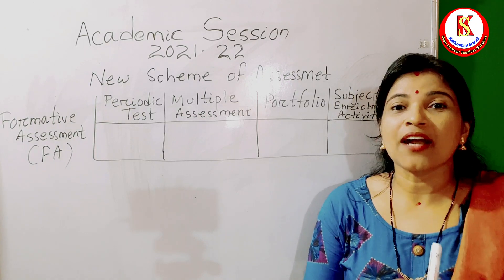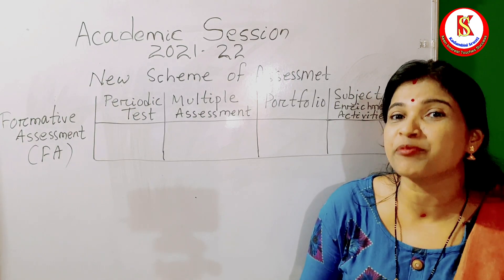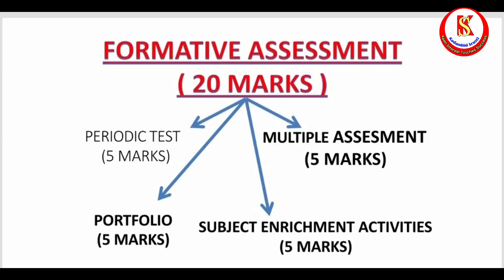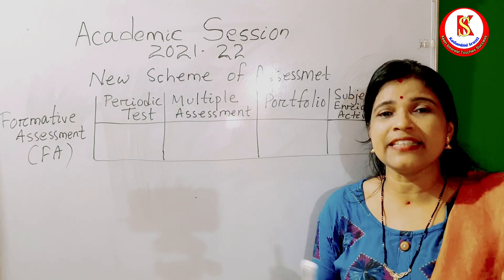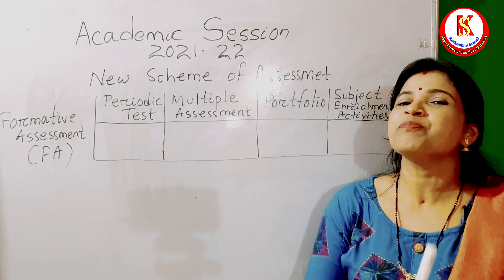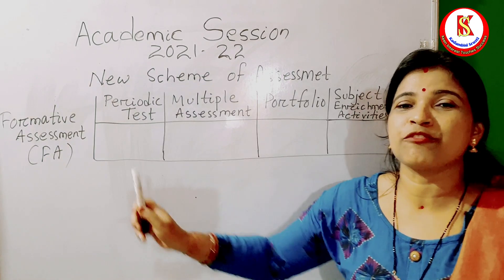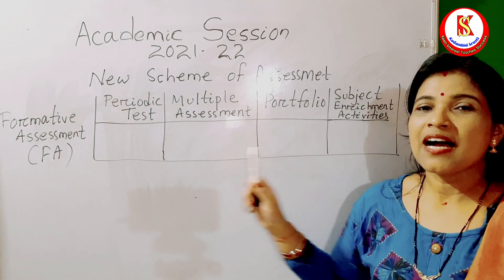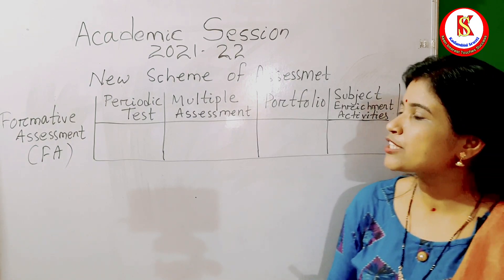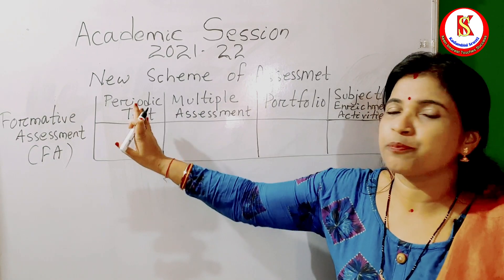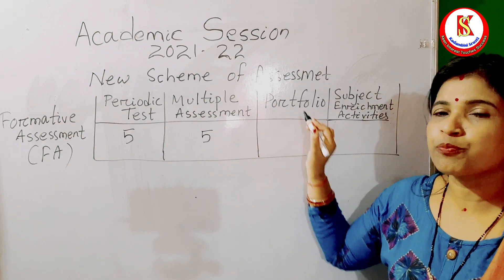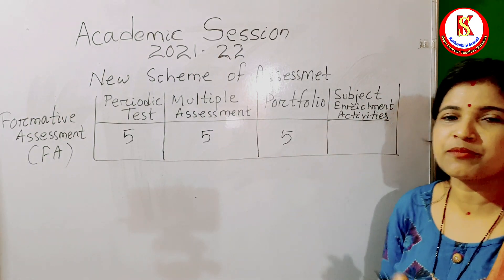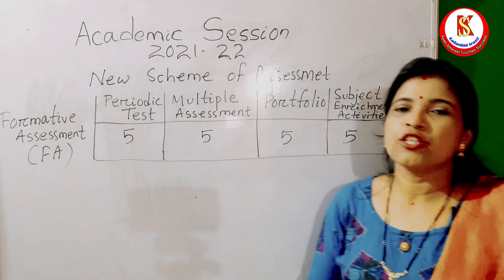What is formative assessment and what are the different elements involved in it? This pictorial representation of the formative assessment is easy to understand. In this new scheme of assessment, also known as CCE — Continuous and Comprehensive Evaluation — in each formative assessment we have four parts totaling 20 marks. For periodic test we have five marks, for multiple assessment five marks, for portfolio five marks, and for subject enrichment five marks.